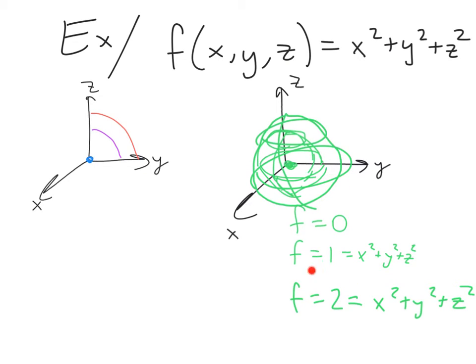And if we were to keep going, our next level surface would be f equals 3. That would be a sphere of radius square root of 3. And then f equals 4, a sphere of radius 2. In this way, by drawing level surfaces of functions of three variables, we're able to get a little bit of a handle on what might be happening in that type of function.